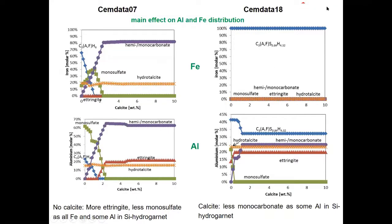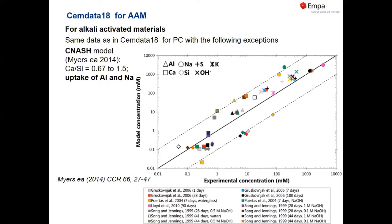Looking more closely at the distribution of iron: in the old database version, iron appeared in all AFM and hydrogarnet phases; now iron is only in the siliceous hydrogarnet, which indirectly affects the distribution of aluminium and everything else. You can download everything from the homepage EMPA/CEMDATA, where there are also many tutorials.